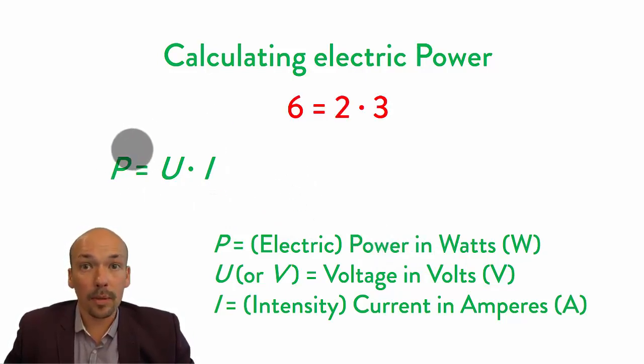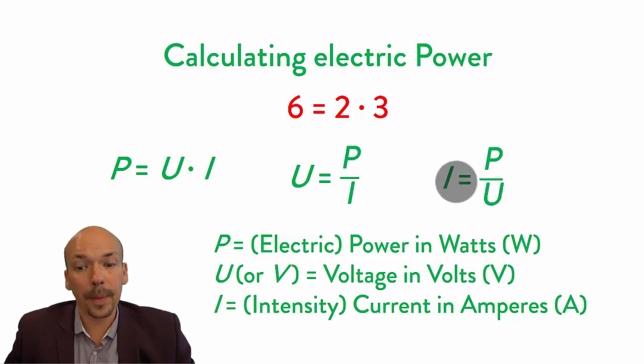Sometimes you have to use different equations. Sometimes you need to calculate the U, so you use this trick. If we need to calculate the U, we have 6 divided by 3 or P divided by I. And if we have to calculate the I, that's the other way around, P divided by U. Sometimes you use this one, this is the standard one, but you have to be able to rebuild it. I use this trick because these numbers are a lot easier than these letters.